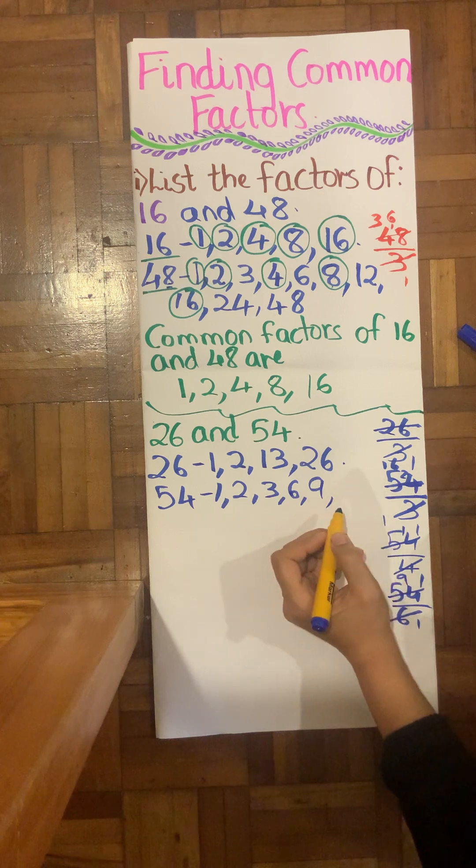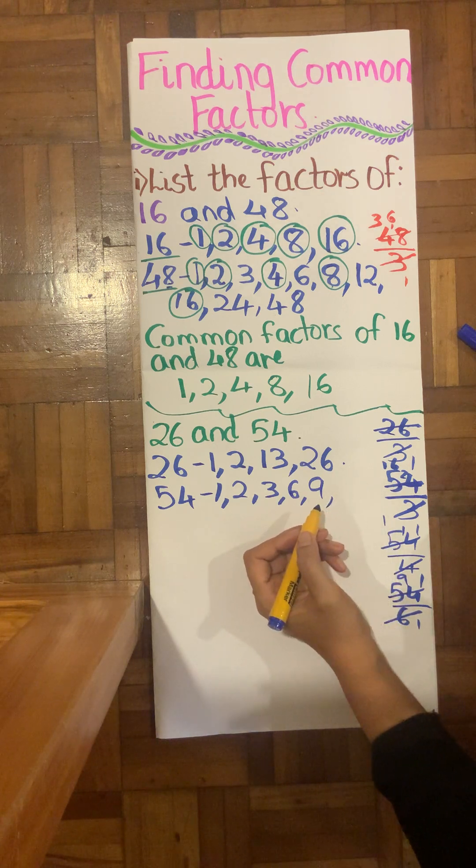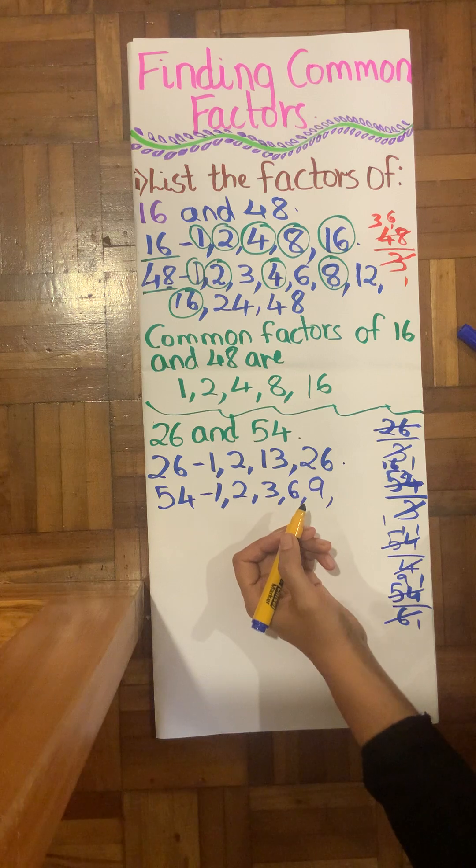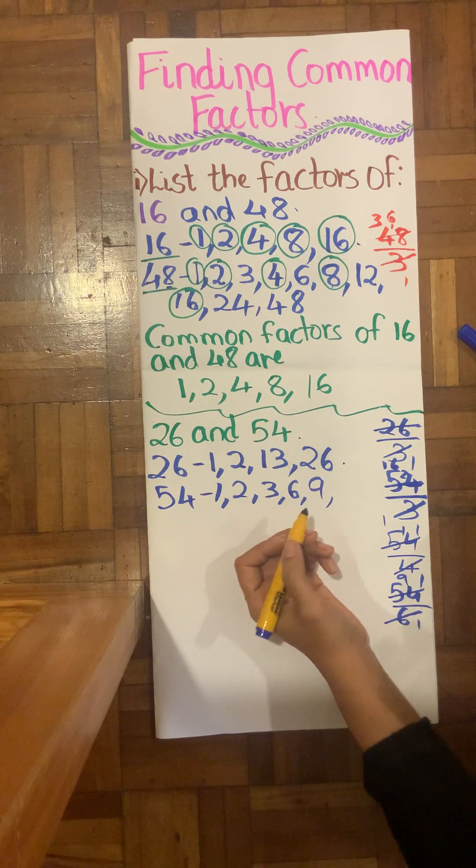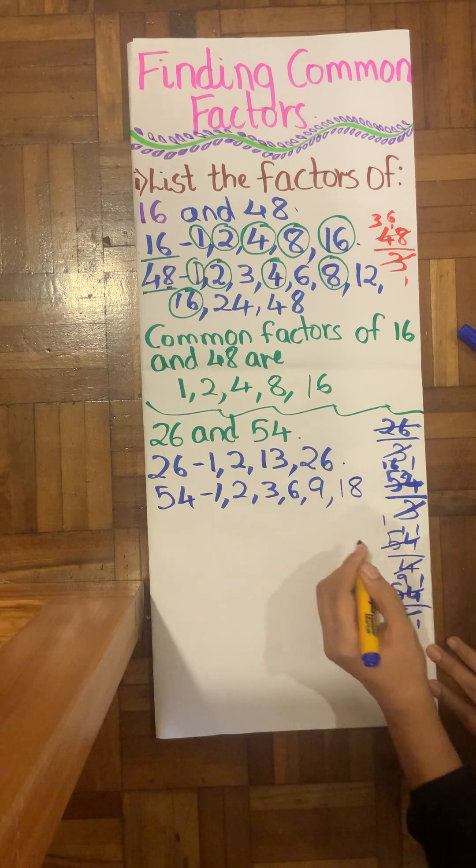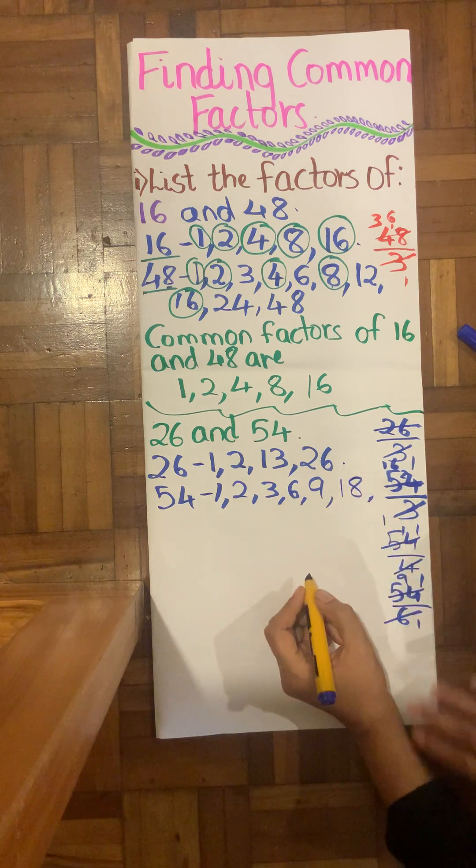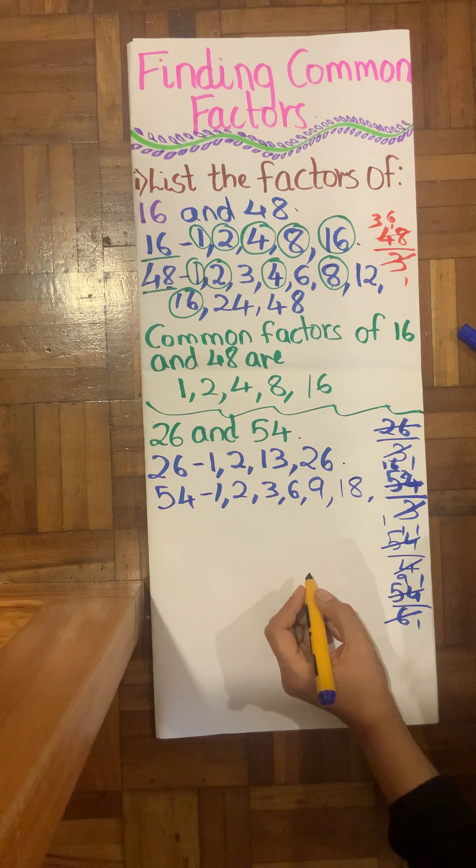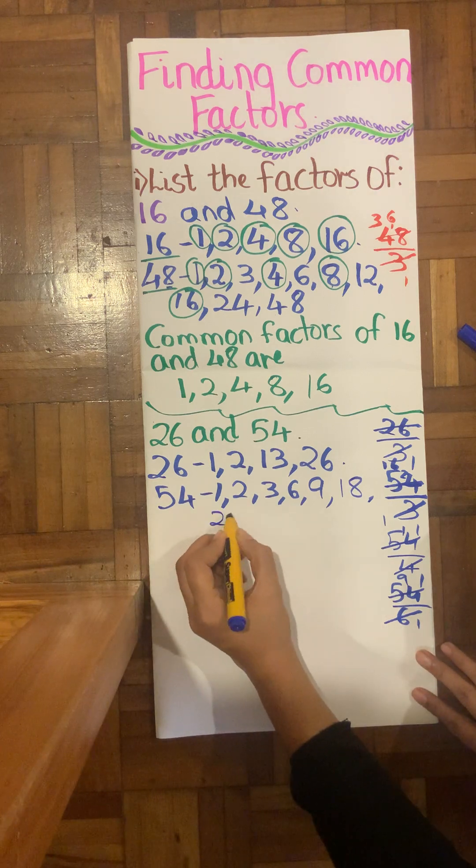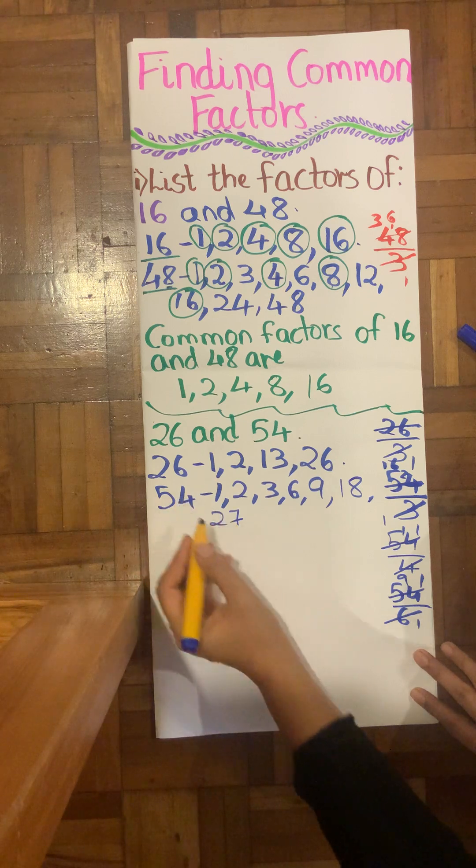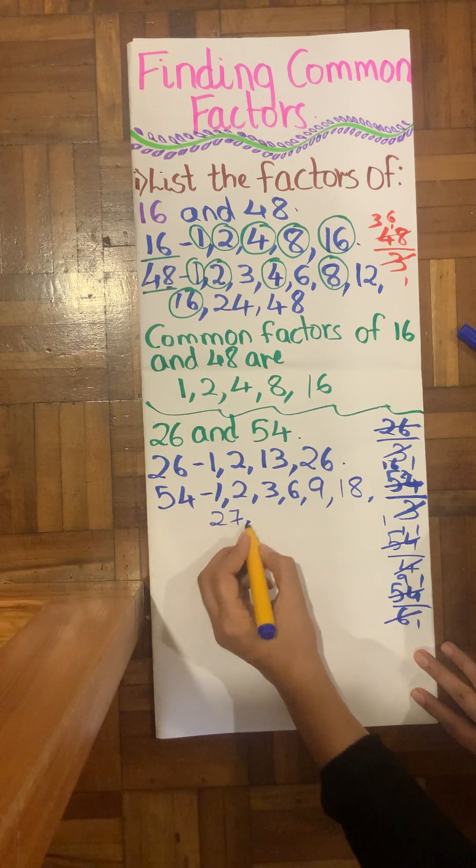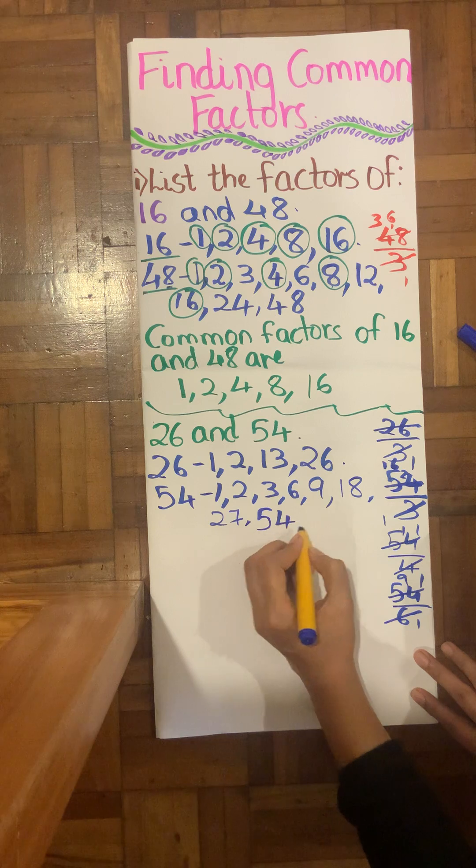And then I have my 10, 11 times 2 is 22. 13, no. 14, no. 15 has 60. 16, no. 17, 18 will come. Yes, 18 times table we have our 54 coming. Then we have our 27. Yes. And since we know 27 times 2 is 54, finally it will come in 54 times table.